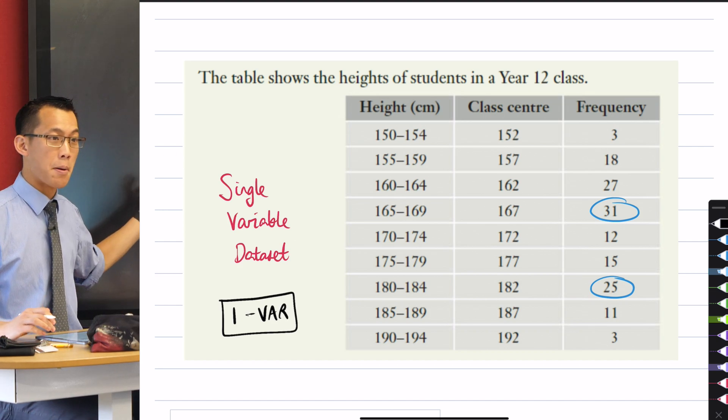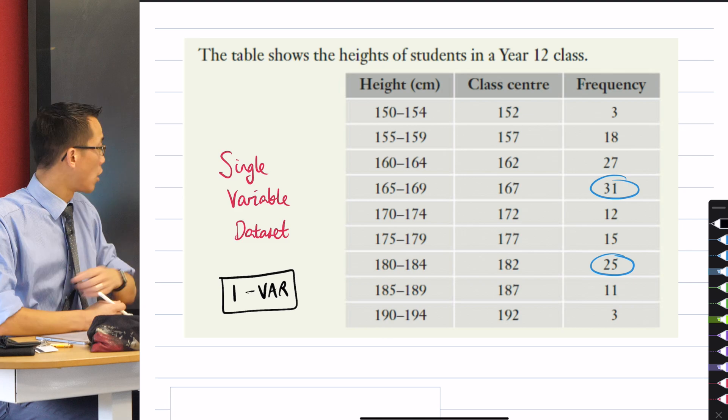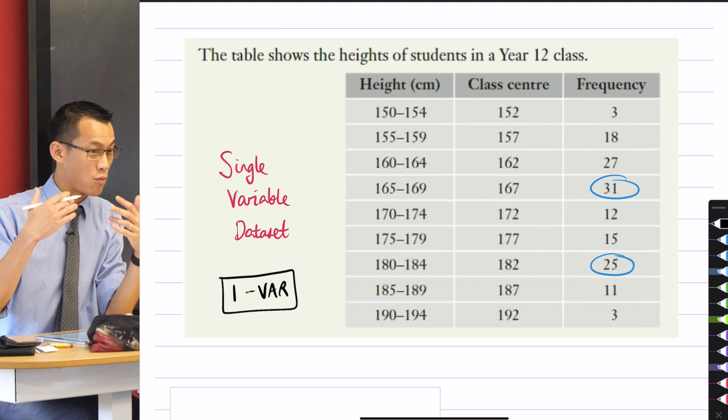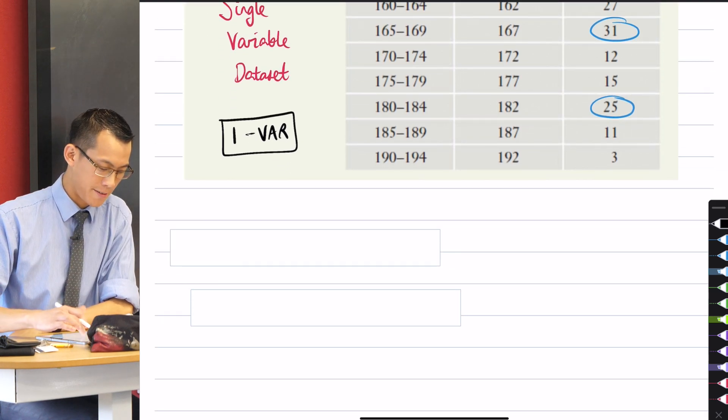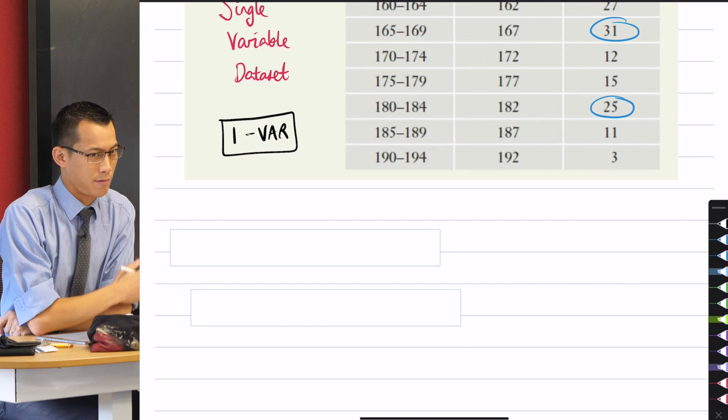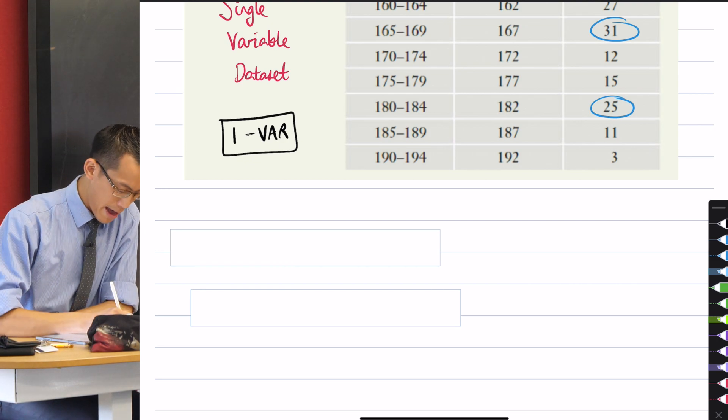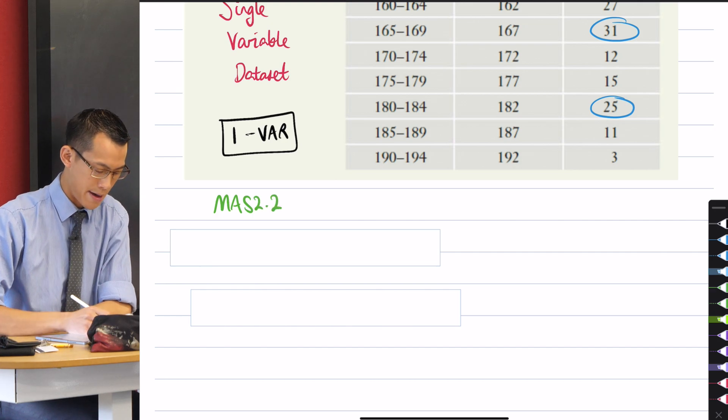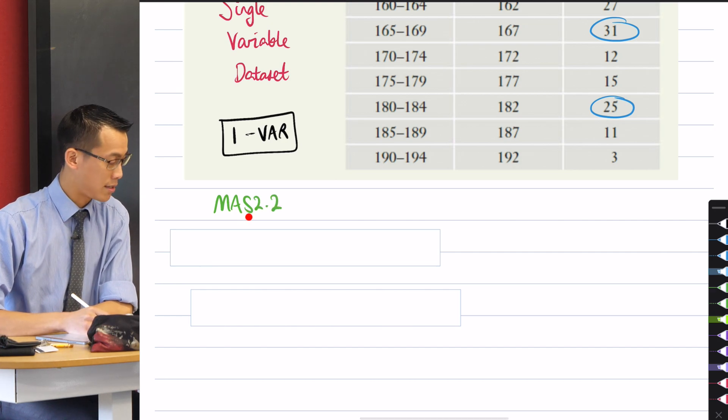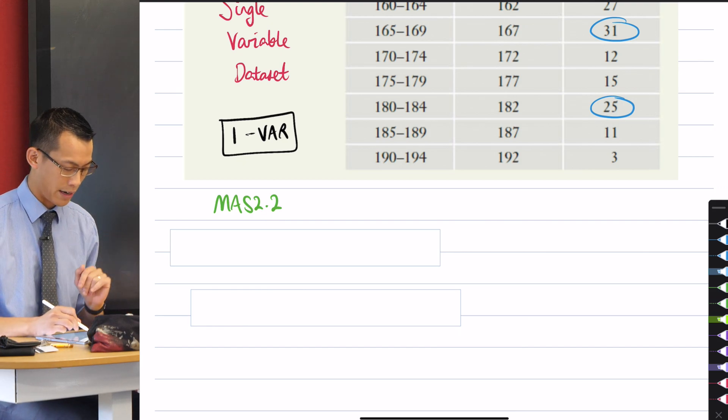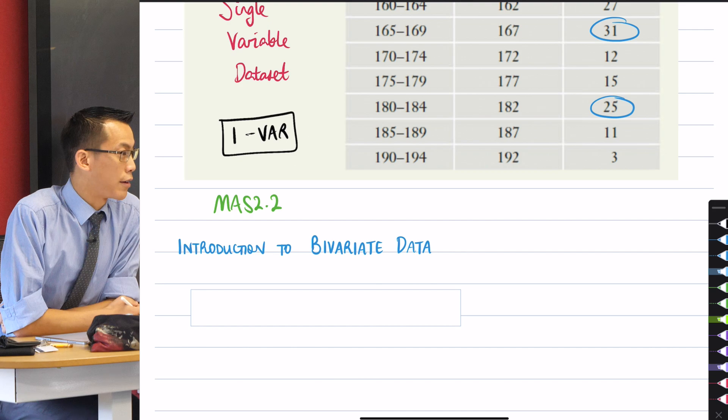Now, I promised that we would go past single variable. Even though you've got all of these complicated things, really it's just the height that is changing - that is the one quantity that we're interested in. We're now moving into this second subtopic, for those of you keeping track at home in the syllabus, it's MAS 2.2, Mathematics Advanced Statistics.